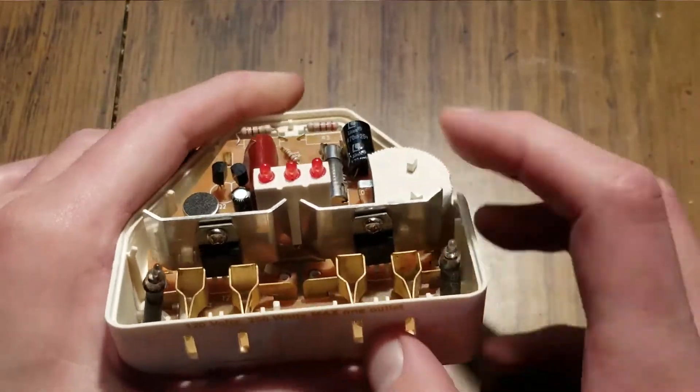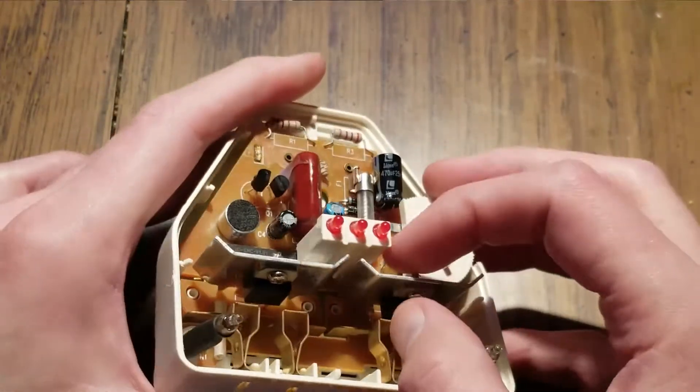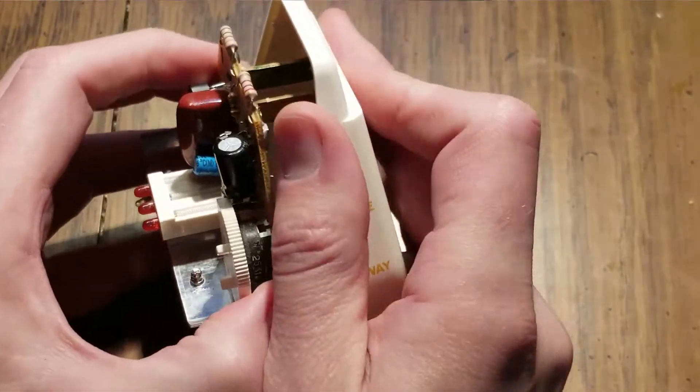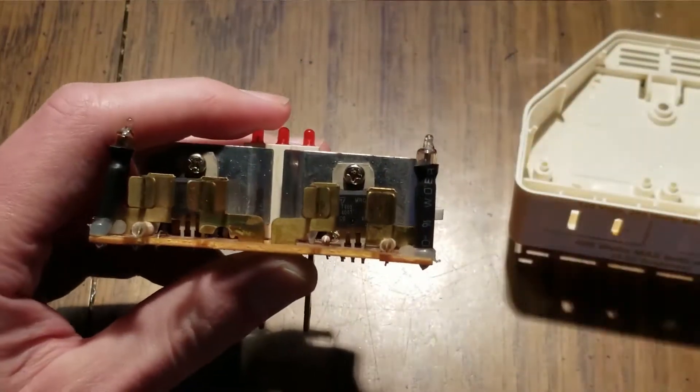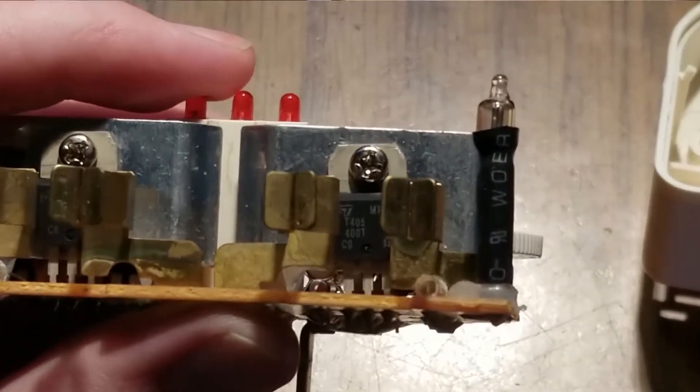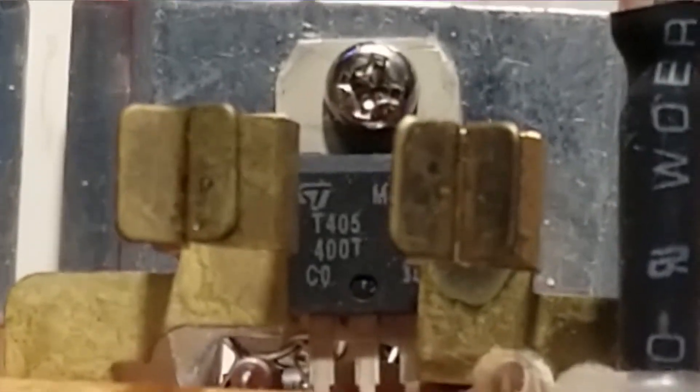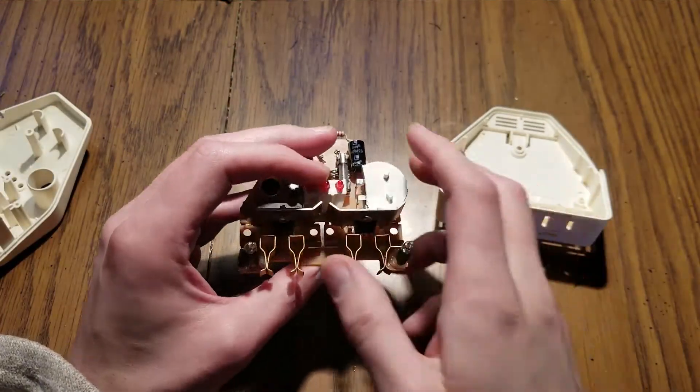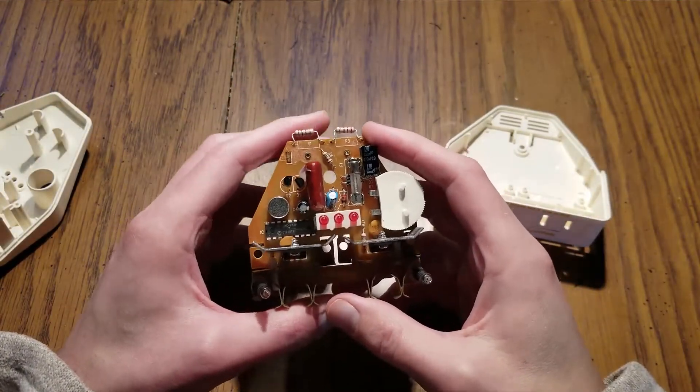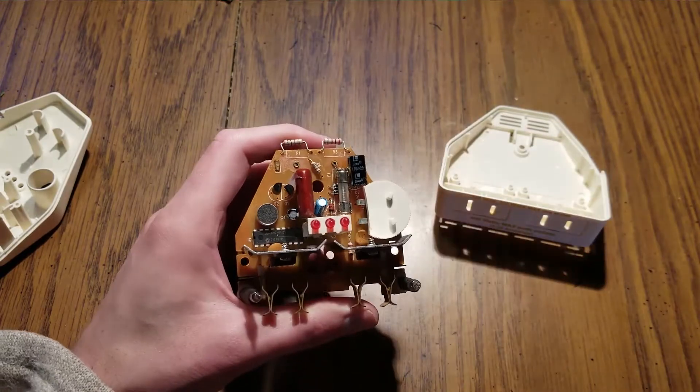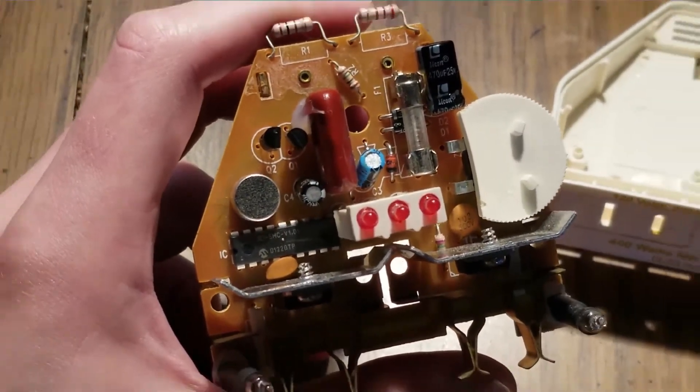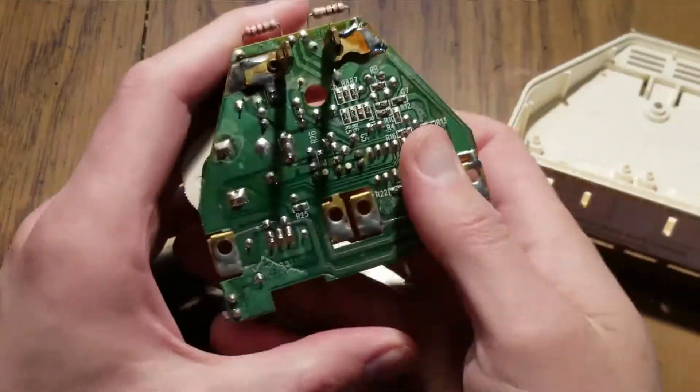So anyways, instead of relays, we have some triacs here. And I looked these up and these are logic level triacs. Let's see if we can have a look here. So that's a T405 and ST part. So I think this is probably the more original clapper circuitry. We have a microcontroller on the board instead of like just a daughter board as I've seen with the other one.